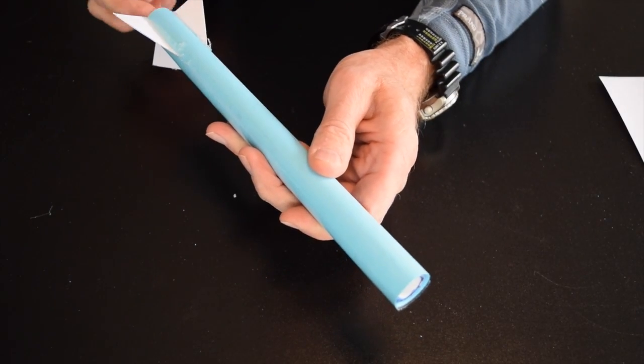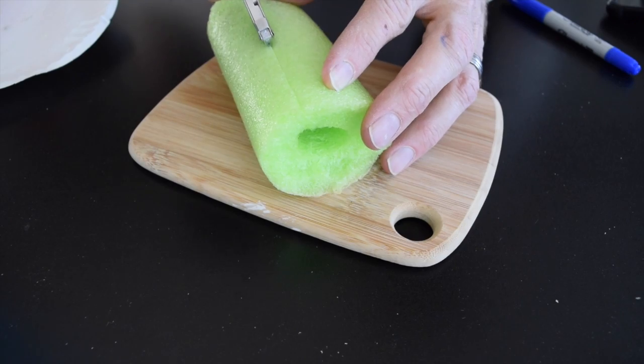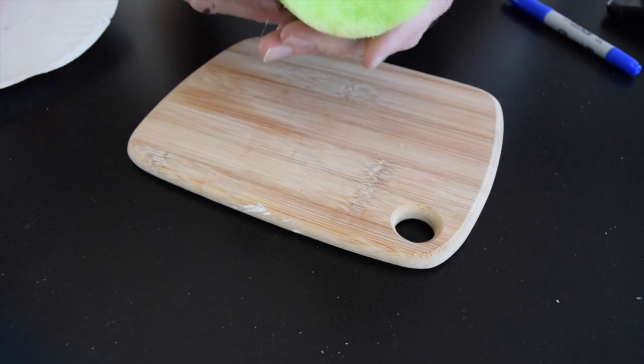After the fins are on, the pipe is removed from the inside to get ready to attach the nose cone. The nose of the rocket needs to be air tight and be able to take the punishment of falling back to earth.